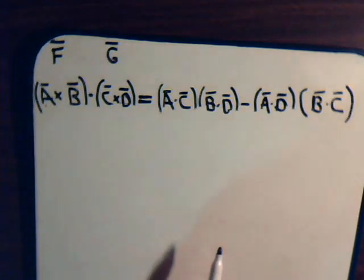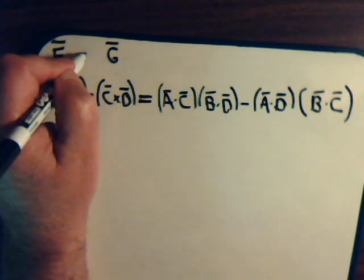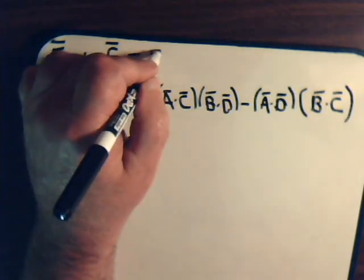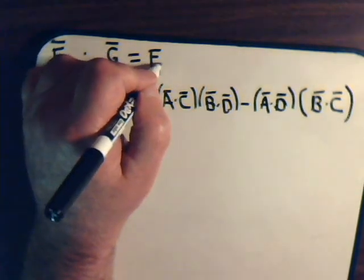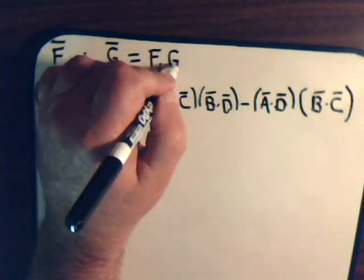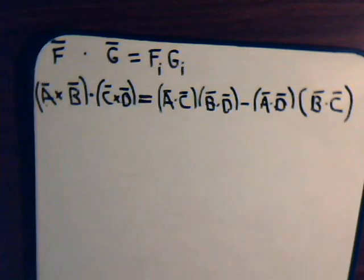So we have vector F dot vector G. In component form, that will be F_i G_i, writing the dot product in component form.